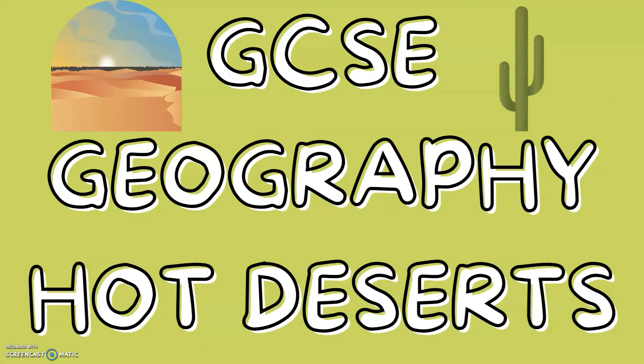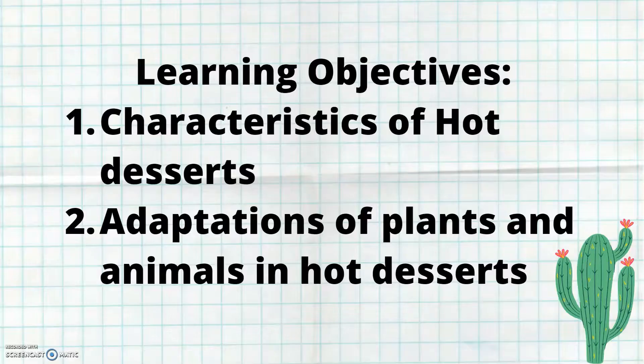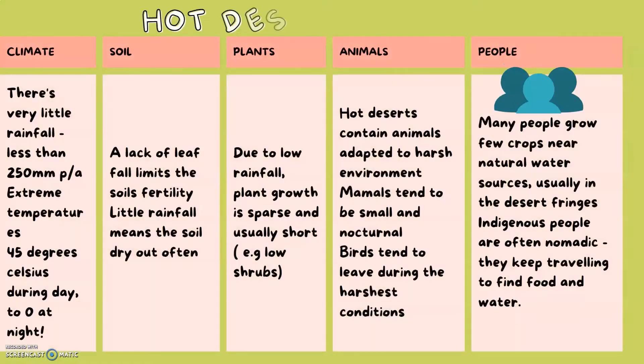GCSE geography: hot deserts. Today's learning objectives — you will learn the characteristics of hot deserts and the adaptations of plants and animals in hot deserts.